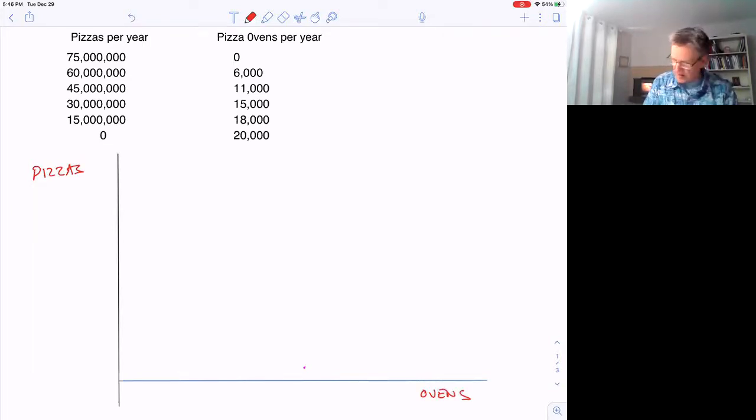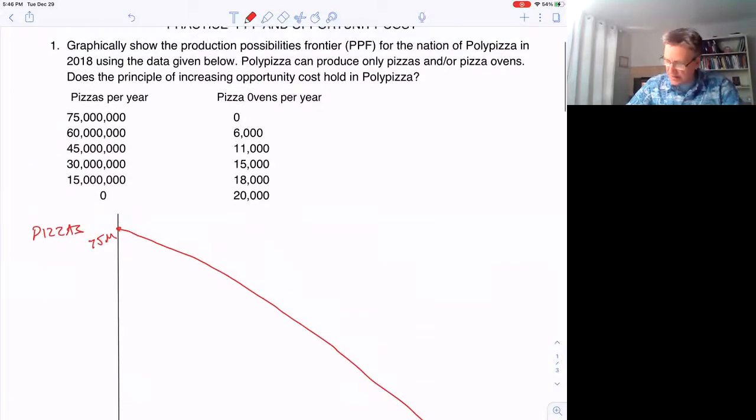It doesn't matter which one you put on what axis. But if we were to make nothing but pizzas, we would make 75 million. If we were to make nothing but ovens, we would have 20,000 ovens, which we'll say is right here. And the PPF should look something like this when you draw it, showing that it's got this bowed-out shape, which is because of increasing opportunity cost.